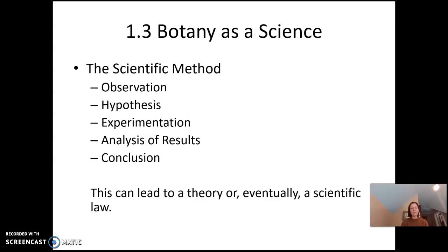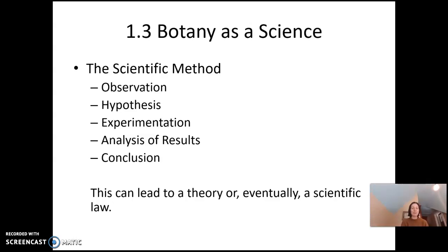We have the theory of evolution — it's not just an idea. A lot of people use the words 'theory' and 'hypothesis' interchangeably, but a theory is something that has gone through all the steps of the scientific method many, many times and is strongly supported. Eventually a scientific law can be formed if applicable — a scientific law is something that never changes. We have very few scientific laws in biology and botany because of the diversity in the biological world. We see more scientific laws in physics and chemistry, like the law of gravity and the law of inertia. In botany, we will see some laws play out in genetics, where the probability remains the same even if experimental results vary.